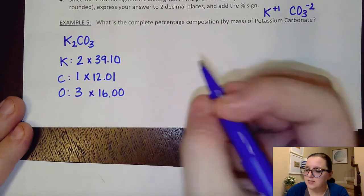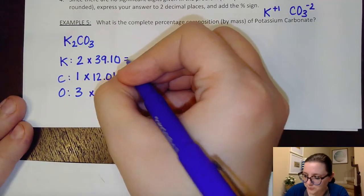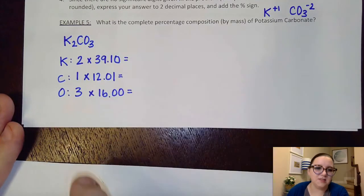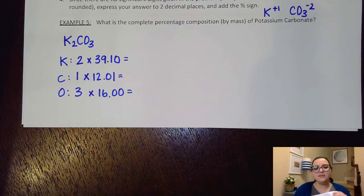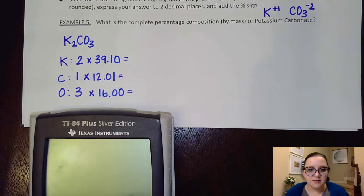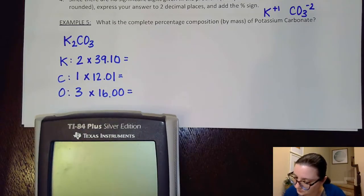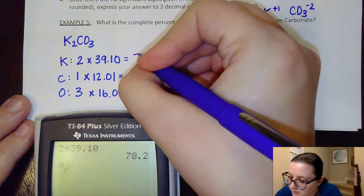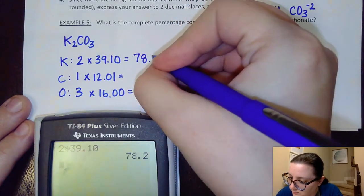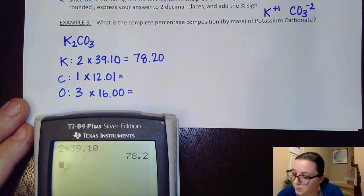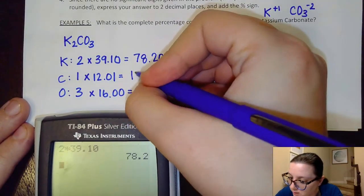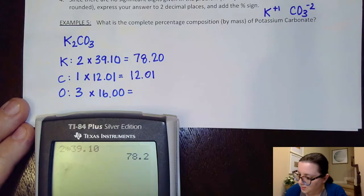I'm also going to go ahead and get some subtotals for each of these. Again, normally I would just take all this and plug it in my calculator. But you'll see having these subtotals here in just a moment is going to prove to be really handy. All right, so I'm going to go ahead and do 2 times 39.10. My 1 times 12.01 will obviously just be 12.01. And then my 3 times 16 is going to be 48.